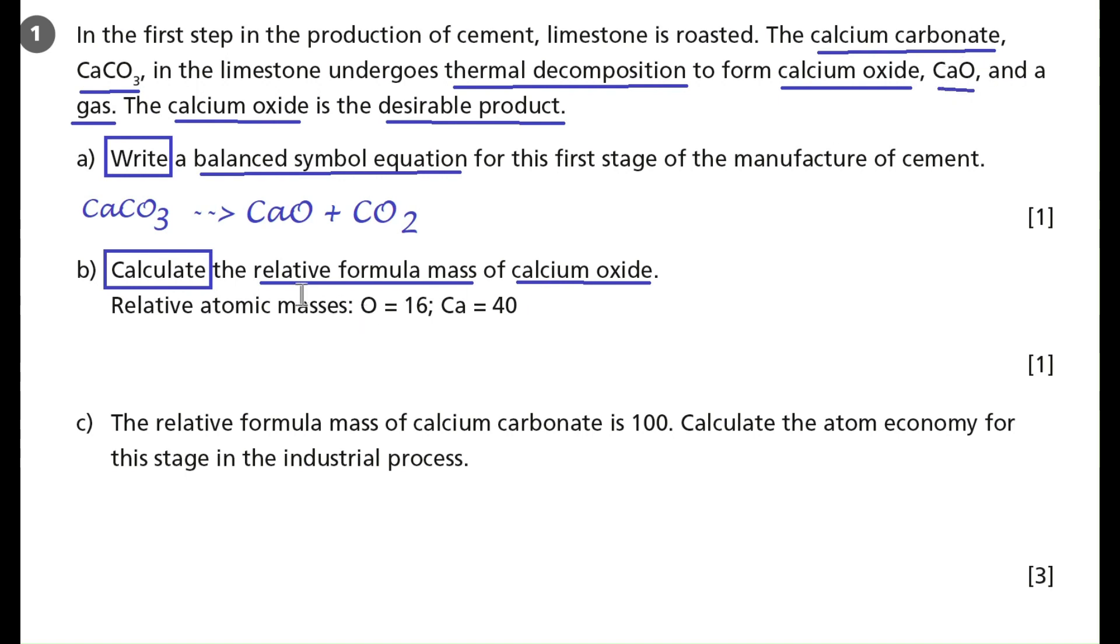Now, remember, we're calculating the relative formula mass. That's the mass of the whole of the formula of calcium oxide. So we need to do the mass of calcium plus the mass of oxygen. Now, with any calculation question, I would recommend that you write out the full working out just in case. So the mass of calcium is given to us, that's 40, and we're going to add the mass of oxygen, which is also given to us, which is 16, which gives us a relative formula mass of 56. Now, there is no units for relative formula mass and no units for relative atomic mass. So the answer is simply 56.